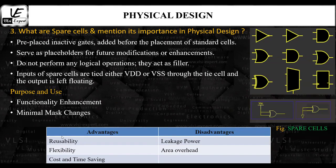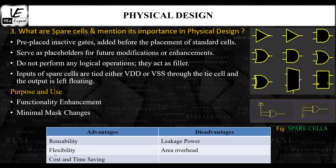The advantages of spare cells include reusability, flexibility, and cost and time saving. Reusability means the base layer masks can be reused, reducing manufacturing cost for new chip fabrication. Flexibility means that using spare cells during physical design allows minor design changes to be implemented seamlessly. Cost and time saving means fewer masks are needed for a new design, saving both manufacturing cost and design time.